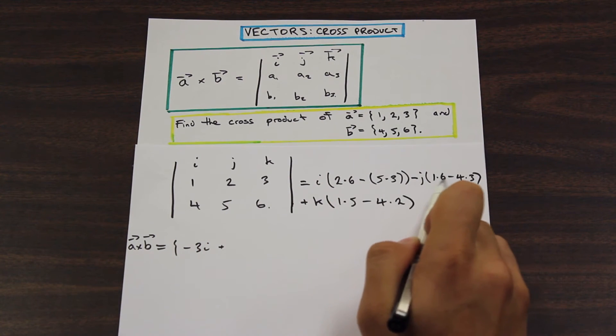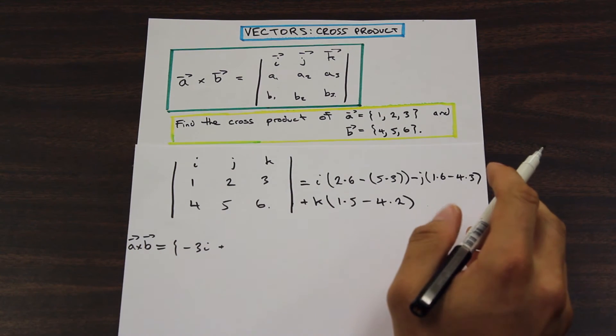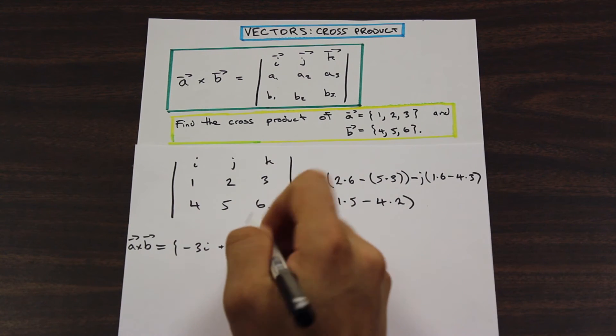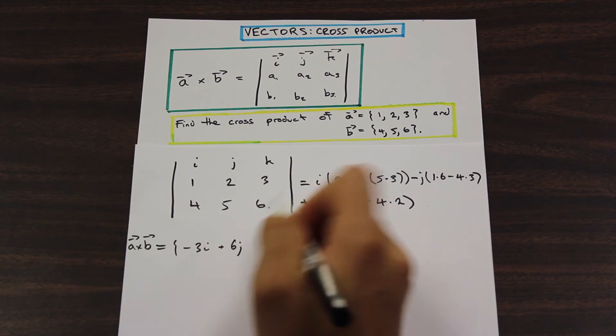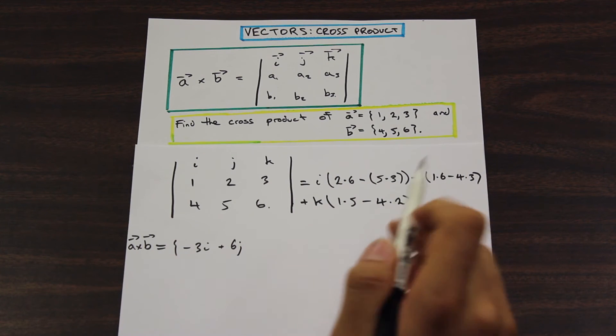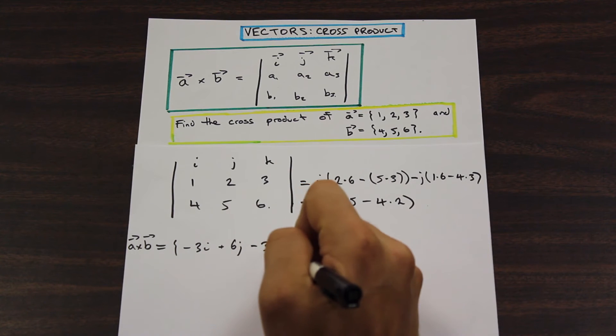Then we're going to have, we have six minus 12, that is going to give us a negative six, that's going to be times a negative, so that's going to be positive six J, and for our K, we have five minus eight, that's going to give us a negative three K.